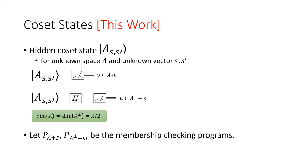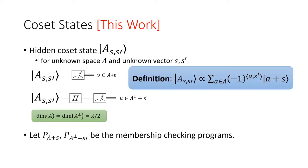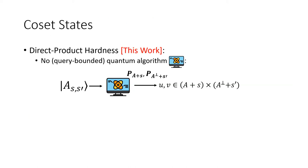Now we formally introduce coset states. A coset state for subspace A and two vectors S and S' is a quantum state satisfying the following properties. If you measure the state in the computational basis, you get a uniformly random vector in the coset A+S, which is the set of vectors in A shifted by S. If you apply Hadamard on the state and then measure, you get a uniformly random vector in the coset A-perp+S'. The coset state is a superposition of all vectors in A+S, and in phase it encodes a superposition of all vectors in A-perp+S'.